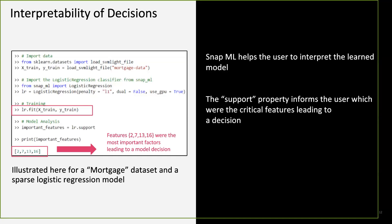Snap ML is also adding model analysis functionality. Using a support function, you can get Snap ML to identify which features in the dataset were the most important factors in the model's decision. This is a work in progress, with plans to add full feature importance ranking to better support model interpretability requirements.